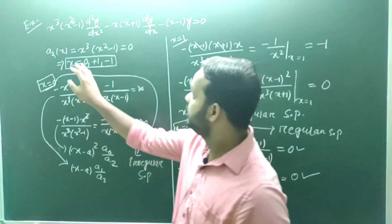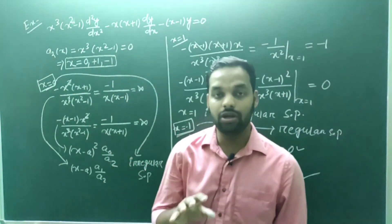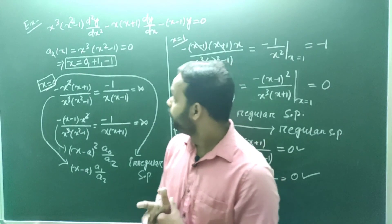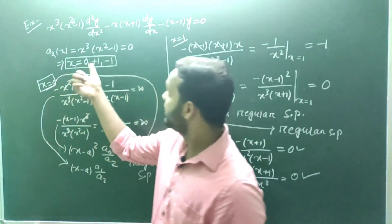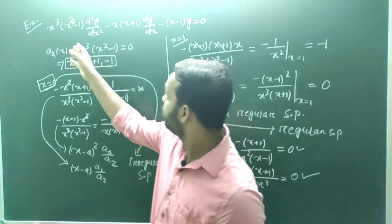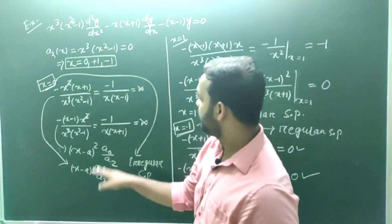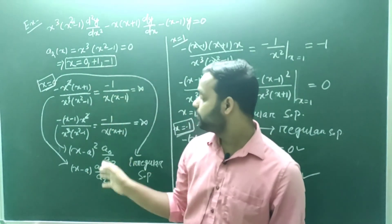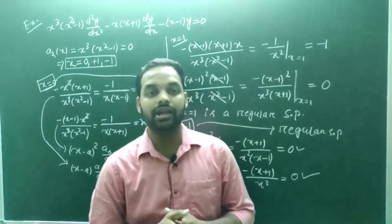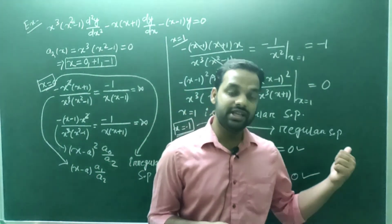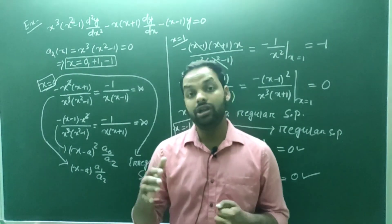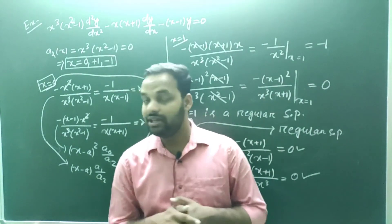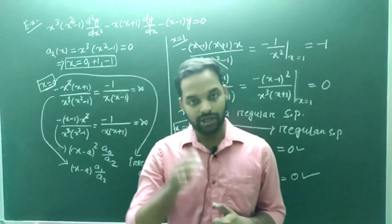So to summarize the example: x = +1 and x = −1 are regular singular points, and x = 0 is an irregular singular point. For x = 0 we cannot find the series solution. For the other two we will be able to find series solutions. Practice this example again so your mathematics is correct — a single sign error makes everything wrong. In the next lecture we will see for which cases we use the power series solution and for which we apply the Frobenius method.